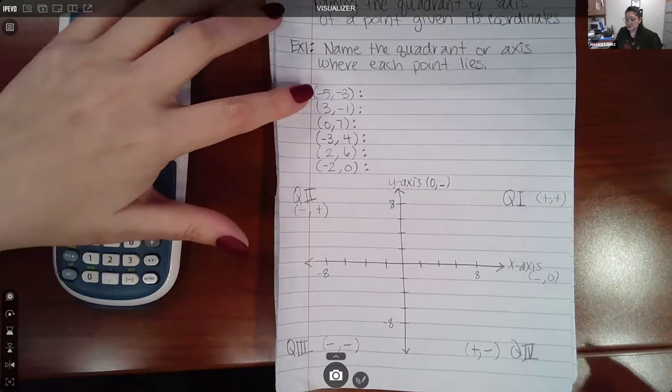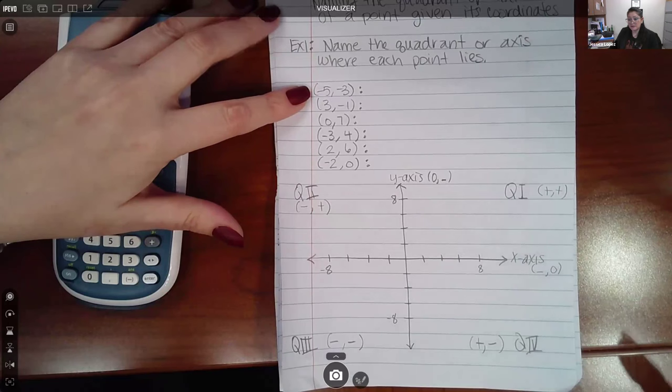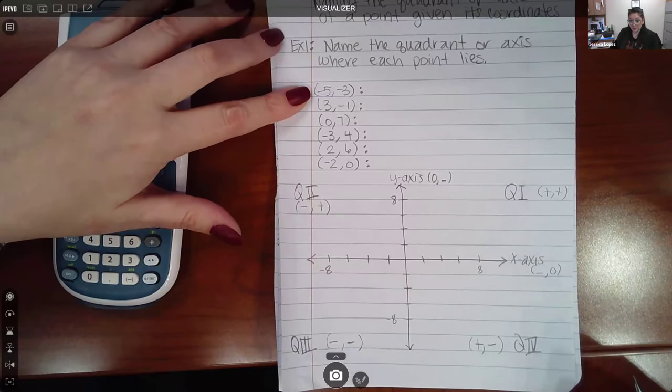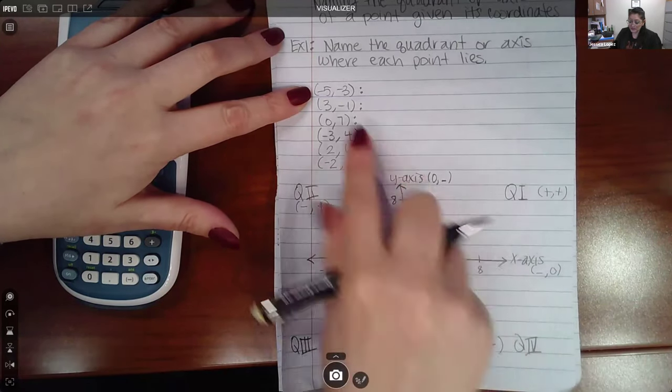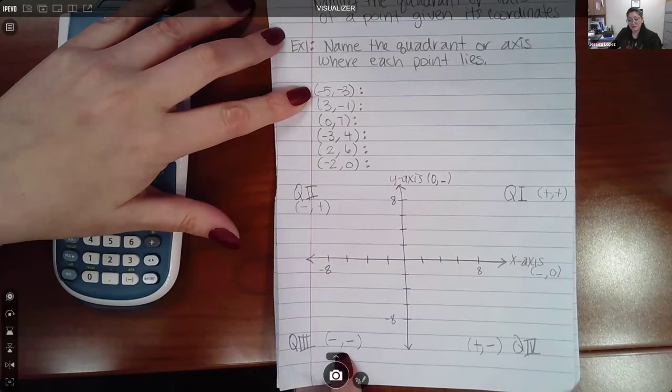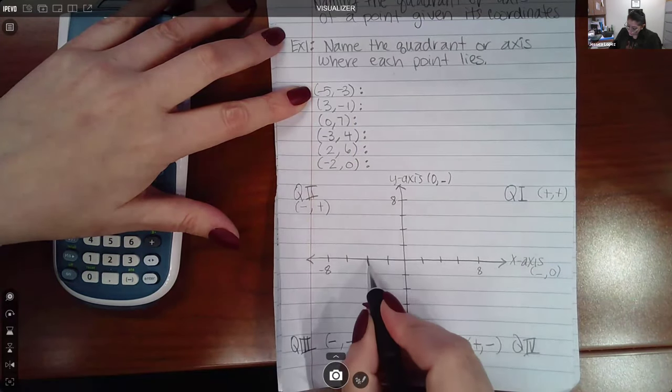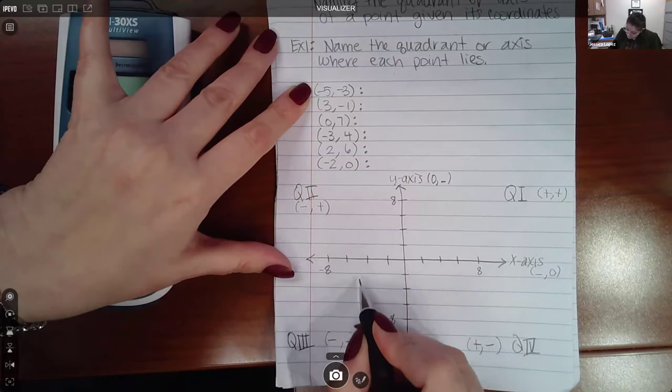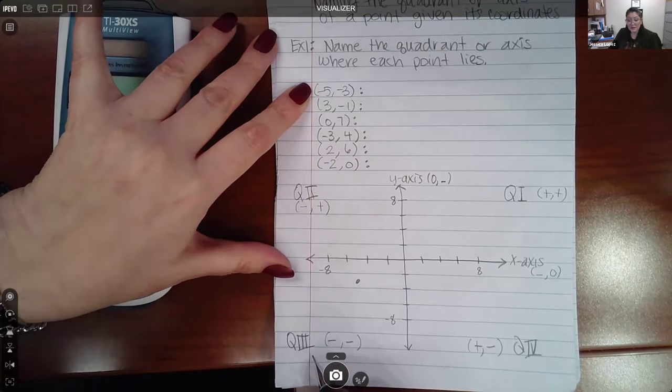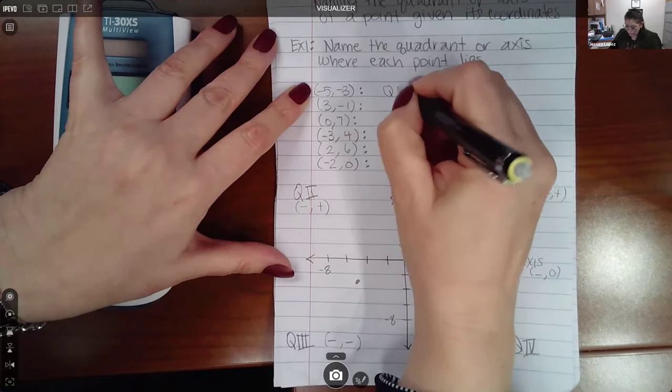Now let's go ahead and plot these points, and then we can name the quadrant or axes of where they lie. Just based off of signs alone, you can already anticipate it's going to be quadrant three, but if I were to go two, four, five, and then two, three, it would be here, just confirming that it is going to be quadrant three.